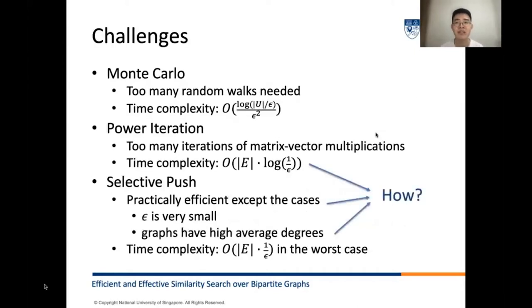Although the previously mentioned two methods solve the problem, they incurred expensive computational overheads in practice. The main reasons are that we need too many random walks in the Monte Carlo approach and too many iterations of matrix vector multiplications in the power iteration method. As for the selective push, it's efficient in practice except the cases where the error threshold epsilon is too small or input graph G has a high average degree. In particular, its time complexity is worse than that of the power iteration. It's natural to investigate how to avoid the expensive costs in the Monte Carlo or power iteration and make selective push more robust while achieving the same time complexity to the power iteration.